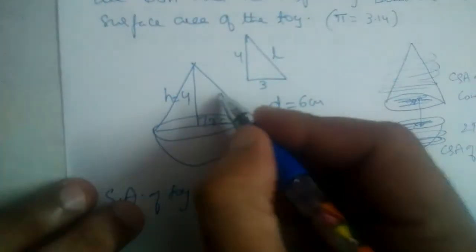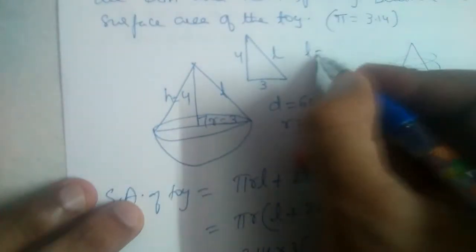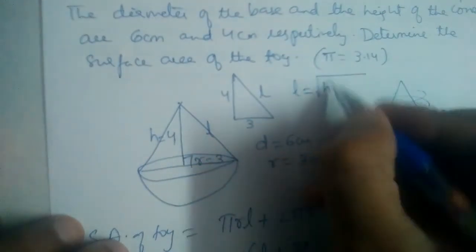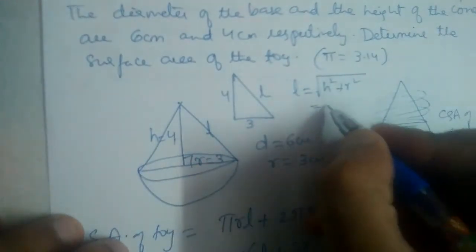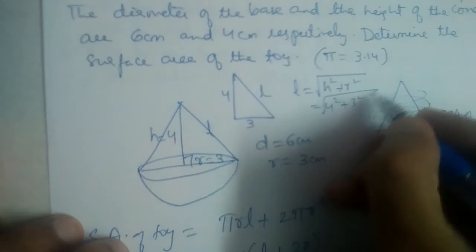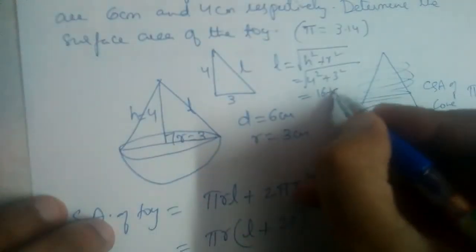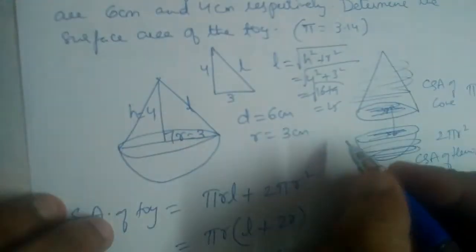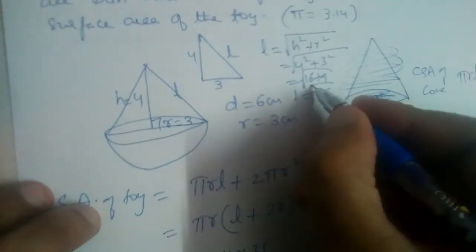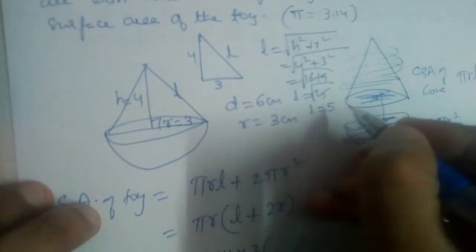This is a right angle triangle. l is slant height, so l can be found using Pythagorean theorem: square root of h² plus r². So 4² plus 3² will give us 16 plus 9 equal to 25.